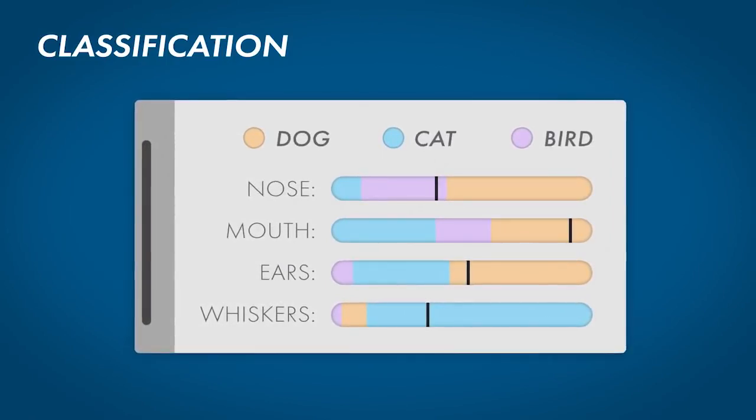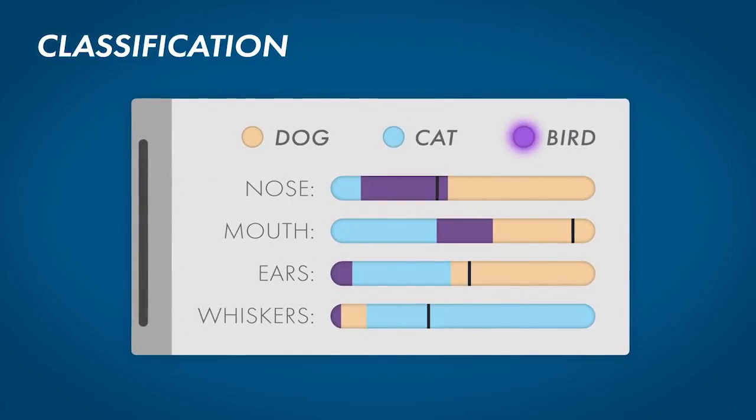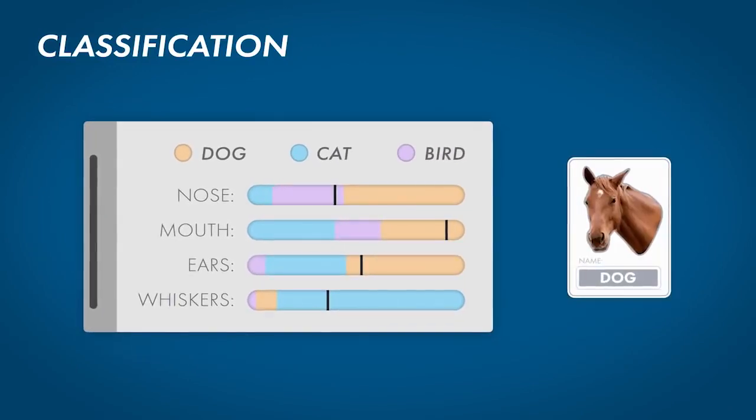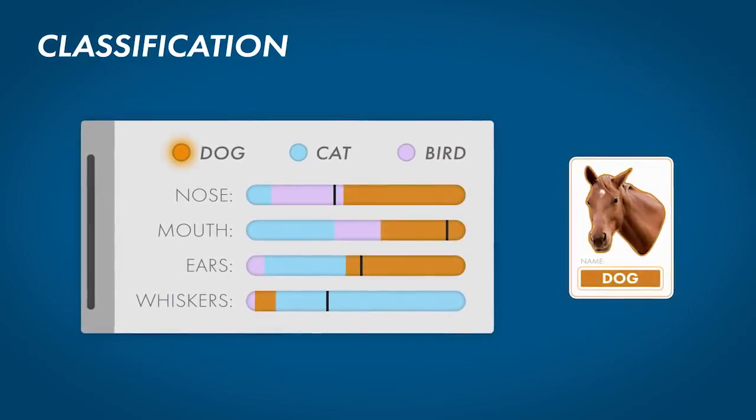This model is good at classifying only dogs, cats, and birds, but it clearly wasn't developed for anything else. It did the best it could with a horse.